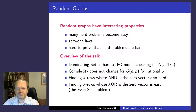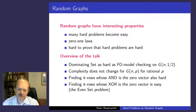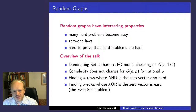There is a lot of research about random graphs and they have many interesting properties. For algorithms, it's interesting that problems that are hard in the worst case are often very easy on random graphs. From the mathematics side, there are the zero-one laws, which are important for the proofs I want to present. Unfortunately, it's very hard to prove that a problem is really hard on average.